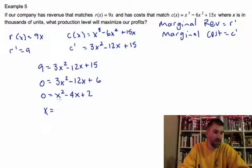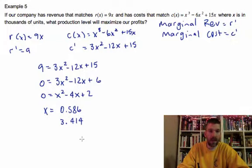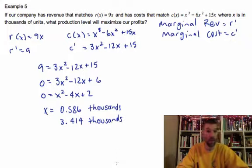So when I punched it in, I get two things. I get 0.586 and I get 3.414. And these are in thousands of units. These are in thousands.